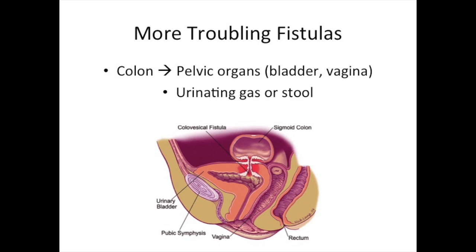There are other more troublesome types of fistulas. They go from the colon to the pelvic organs, including the bladder and, in women, the vagina. These can manifest as urinating gas or stool, or passing gas or stool per vagina.